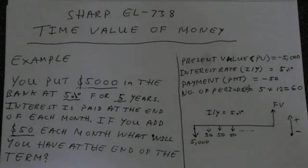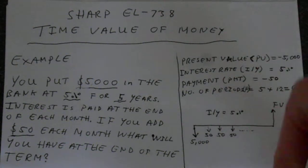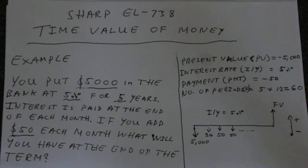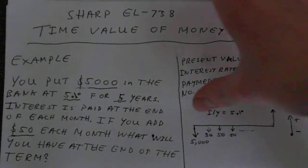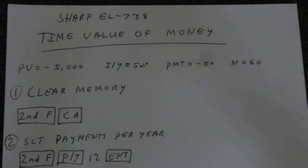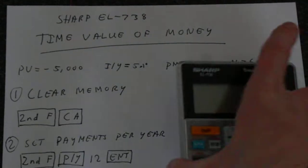We can draw this as a cashflow diagram with payments going away from us in this sense, so they're the negative ones. And the future value will be positive, so it's up this way. So let's look at the steps required to do this and bring in our calculator.